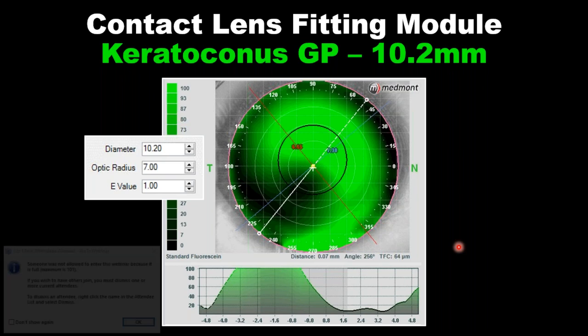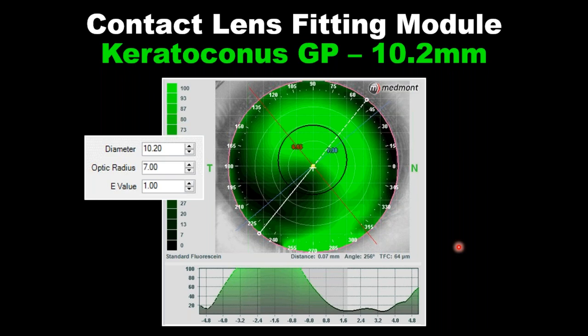Now let's use the topographer to fit a contact lens — we've placed a rigid contact lens on the eye in a simulated environment. Ahora vamos a usar el módulo de adaptación de lentes de contacto. Lo que hicimos fue poner un lente de diámetro 10.20mm encima de una córnea para que el módulo nos ayude a adaptar ese lente de contacto. I'm going to steepen the base curve until I have a lens that clears the apex of the eye and protects the diseased tissue.